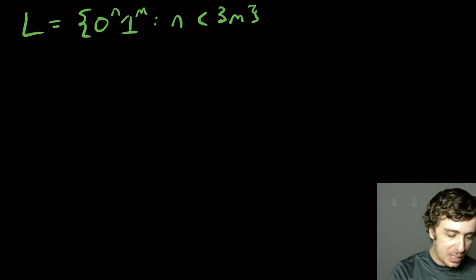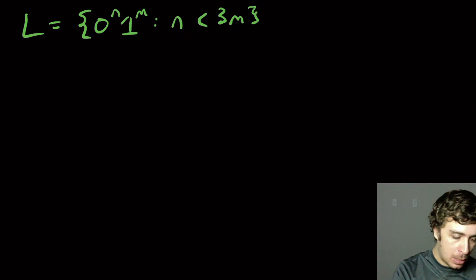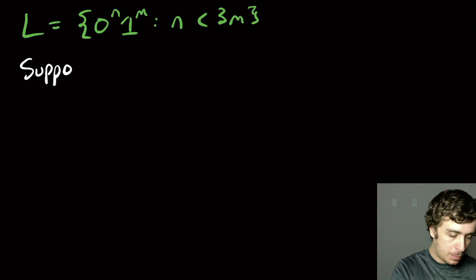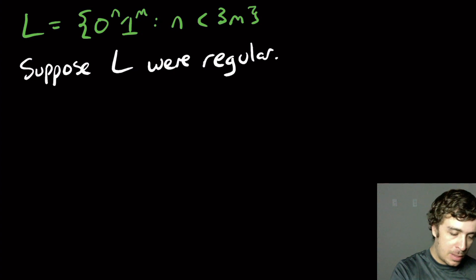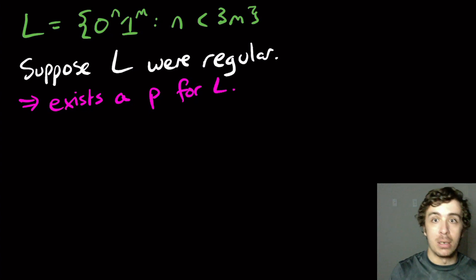All right, so let's prove that this language 0 to the n, 1 to the m, where n is strictly less than 3m, is not regular. This turns out to be a very standard proof. So let's suppose that L were regular. Then by the pumping lemma, there exists a pumping constant p. I'm just going to abbreviate it to exists a p for this particular language L.